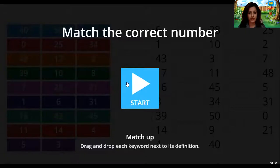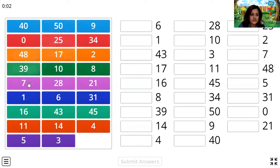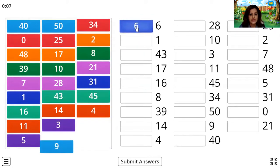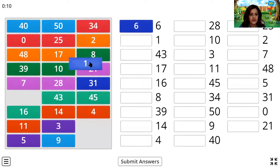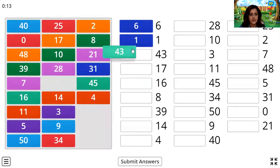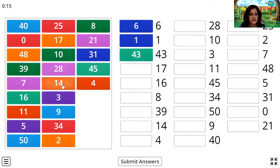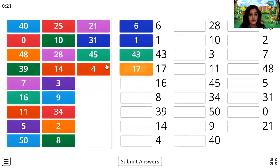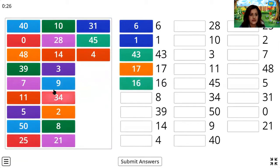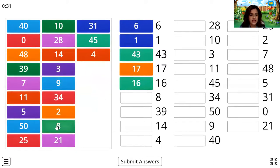Match the correct number. Drag and drop each number next to its definition. Let's find number 6 and drag and drop. Let's find number 1 and drag and drop. 43... its goal number is still 15. 17 — 1 and 7 — 17. It's a very good revision of numbers children. 16, 8. Where is number 8? Can anyone help me out in finding number 8? Yes, here it is.